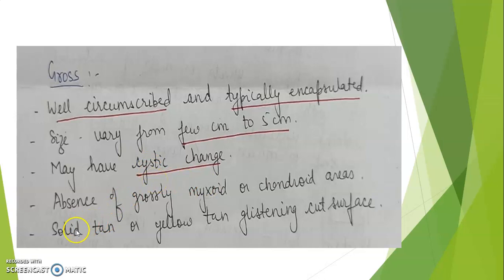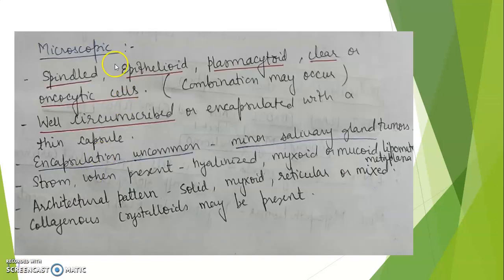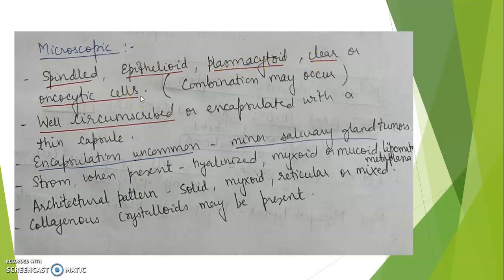On cut section, they are solid, tan or yellow-tan with a glistening surface. On microscopic examination, the tumor is formed of either spindle cells, epithelioid cells, plasmacytoid cells, clear cells, or oncocytic cells.